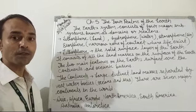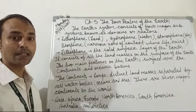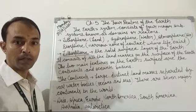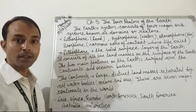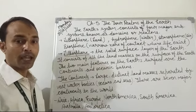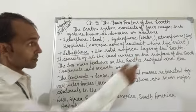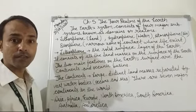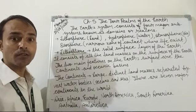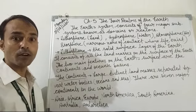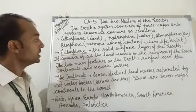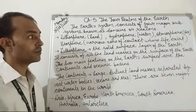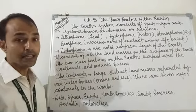So what are the four major domains of the earth? These are: the lithosphere, which is land; the hydrosphere, which is water; the atmosphere, which consists of different masses of gases; and there is a narrow contact zone of all three, called the biosphere — the narrow zone where life exactly exists.